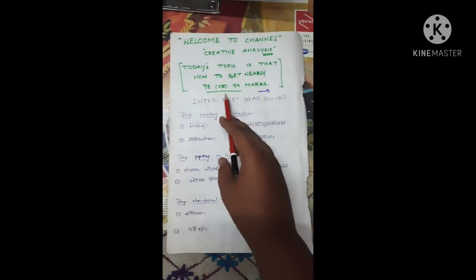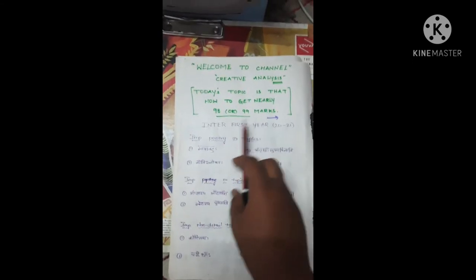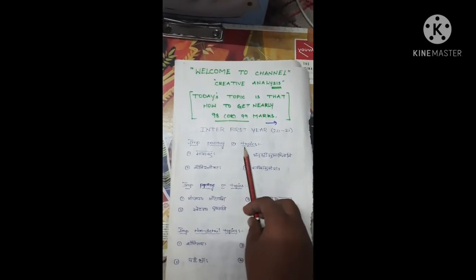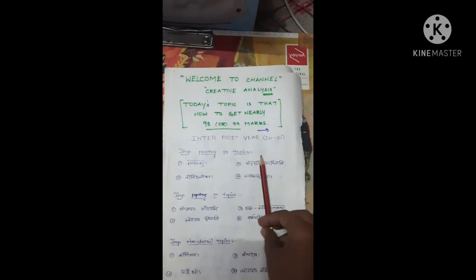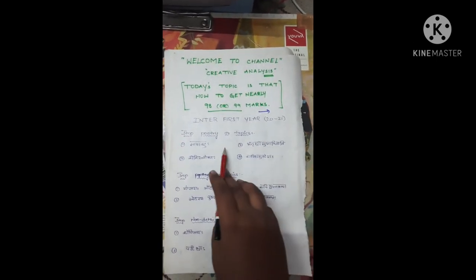Hello friends, welcome to Channel Creative Analysis. Today's topic is how to get nearly 98 to 99 marks in intermediate Sanskrit 2021 exams. We have 4 lessons to cover.